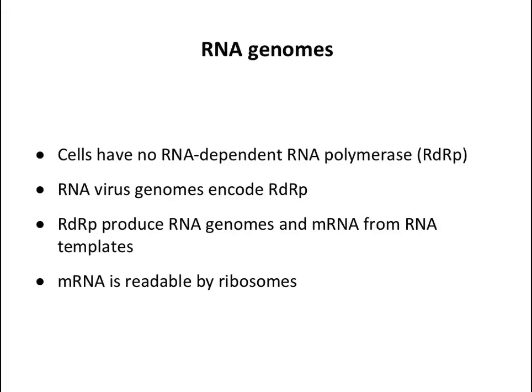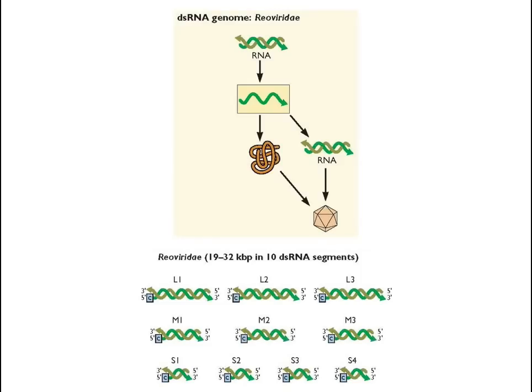RNA genomes are interesting because the cell can't copy them — it doesn't have enzymes to replicate RNA genomes. So all RNA virus genomes encode their own RNA-dependent RNA polymerase, abbreviated RDRP. These enzymes make new genomes from RNA genomes and also make mRNAs. The mRNA made by these viruses is ribosome-readable.